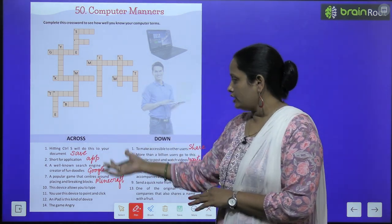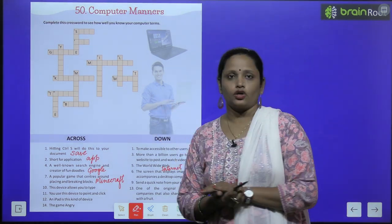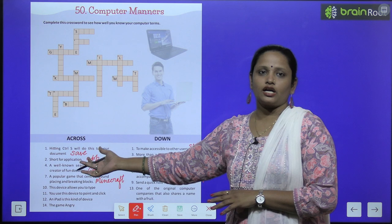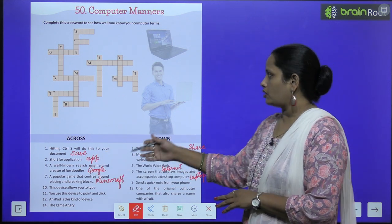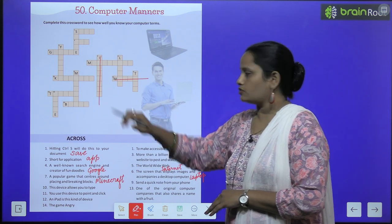What you have to do? You have to read all these questions and answer, and then you have to fill in the crossword puzzle. So here you can see across column and down column. Across means this way and down means this way.